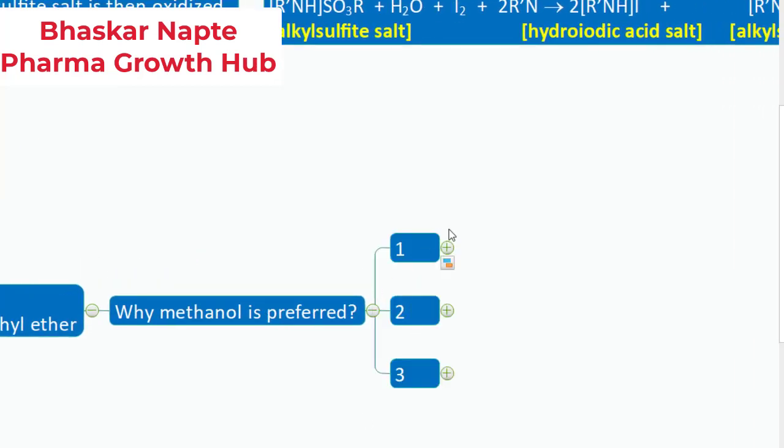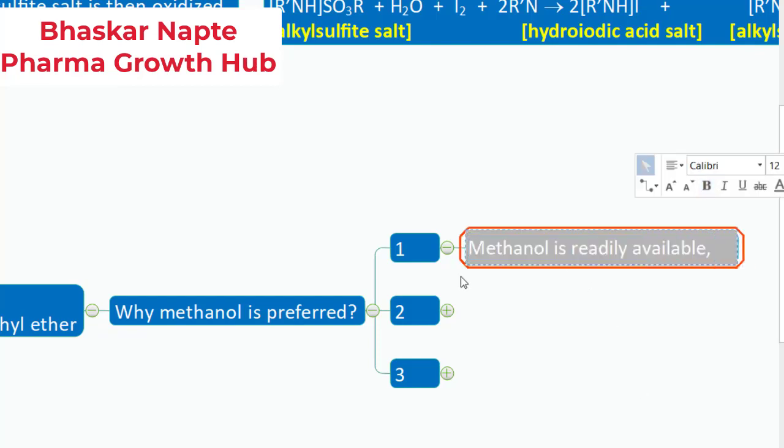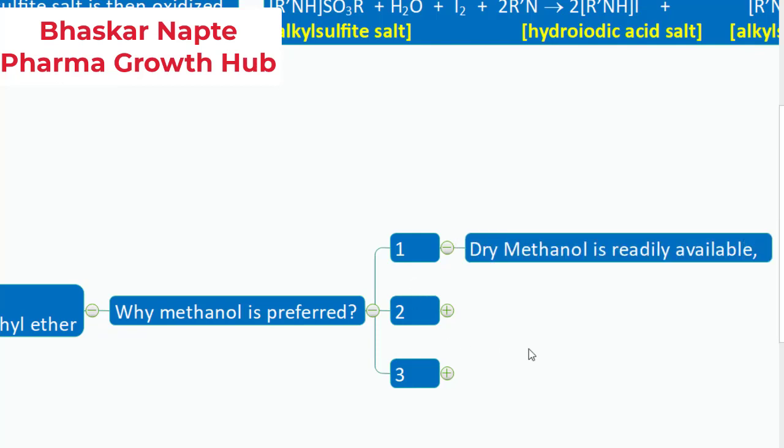Point number one: dry methanol is readily available. The important point is not just any methanol grade but dry methanol. You must have read on the label of the bottle that it is not just any methanol but dry methanol which is containing almost negligible amount of water or no water content, because at the end you are going to quantify the water content. For that reason your methanol should be free of water and that is called dry methanol. This dry methanol is readily available and that makes it the preferred choice as a solvent.